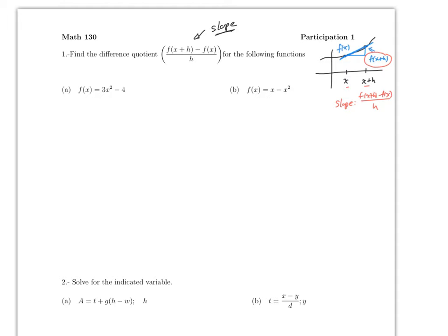For part a, f of x is x squared minus 4. So you need to find f of x plus h first. Remember, you need to replace x with x plus h, and then simplify. All we did here is wherever you see an x, just put x plus h. Now if we use FOIL or the distributive property, this is x squared plus 2xh plus h squared.